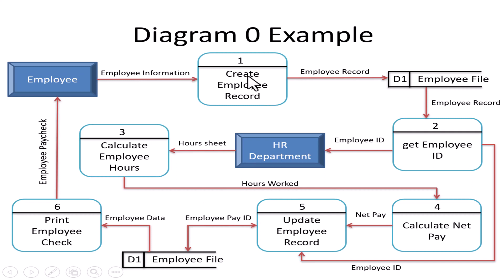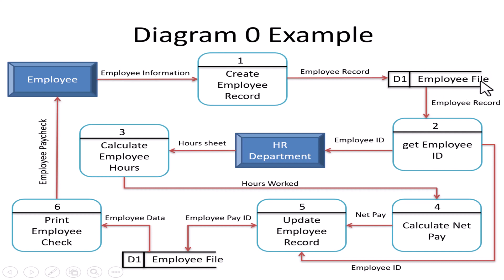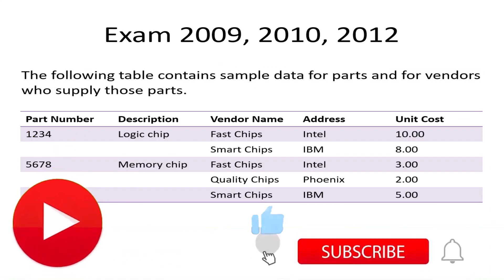Problem 4 and 5 concern naming conventions. Process names must begin with a verb — for example: create, get, calculate, print, update. External entity names and data flow names should be nouns, not verbs. Data store names should refer to storage — for example: 'employee file' or 'record.'